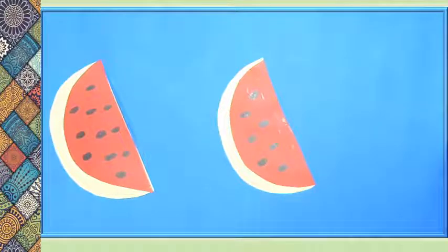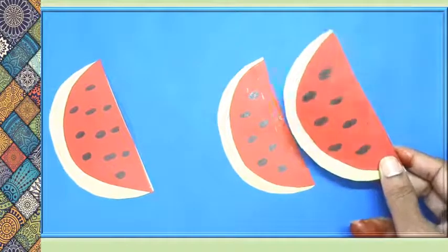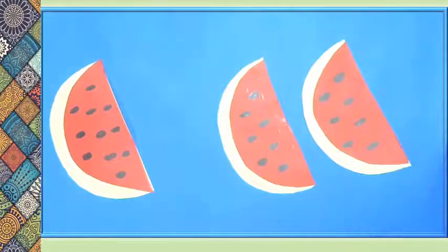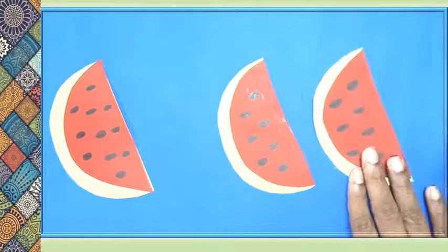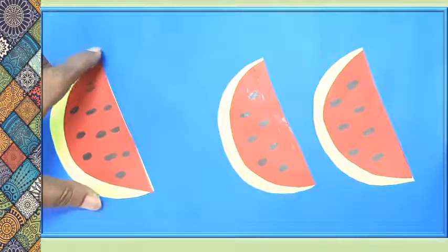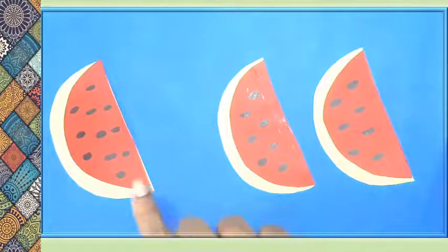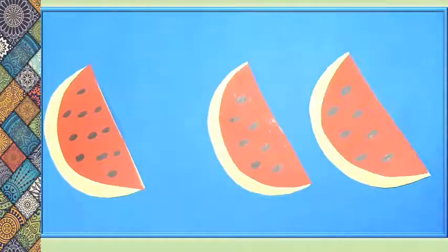What do I have here? I can see some watermelon slices — one watermelon slice, another watermelon slice. I'm going to add the cutout of this watermelon slice: one watermelon slice, another watermelon slice, one more watermelon slice. All these watermelons are of one color and one size, so we will call them a set of watermelons and they are all the same.